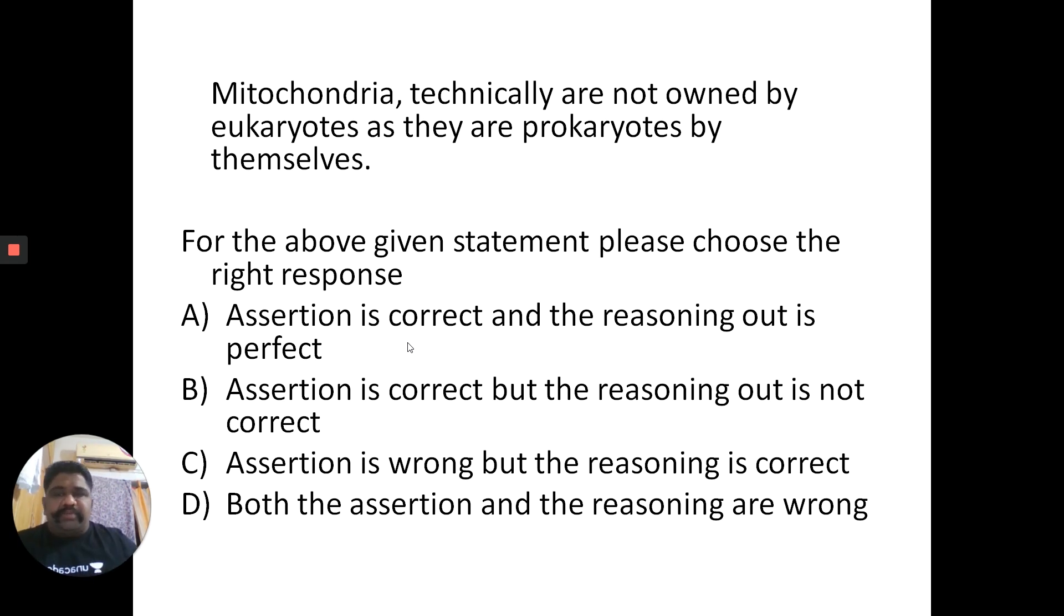Option B says assertion is correct, but the reasoning out is not correct. C says assertion is wrong, but the reasoning is correct. And D says both the assertion and the reasoning are wrong.